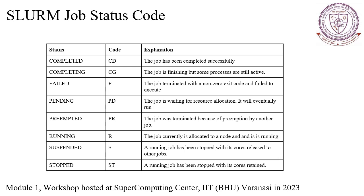SLURM job status codes include: Completed (CD) — the job or job step has successfully finished and executed all of its tasks, reaching its completion point. Failed (F) — the job or job step encountered an error or failure during execution.